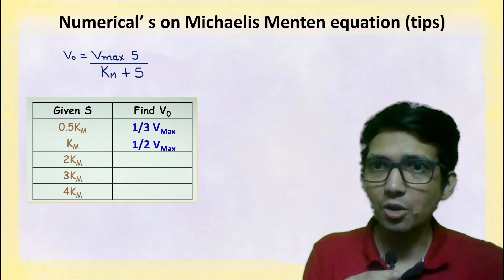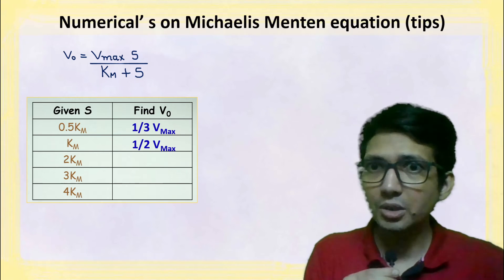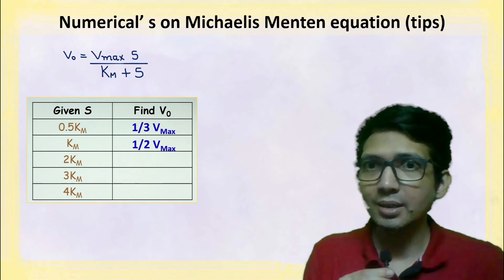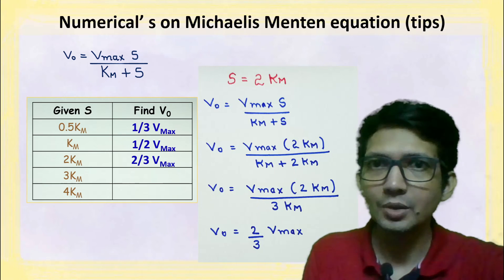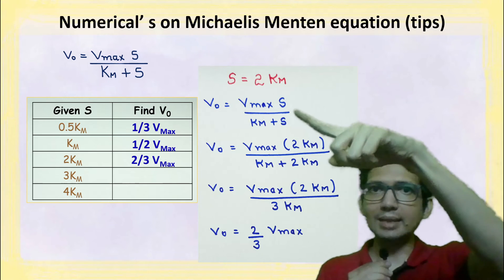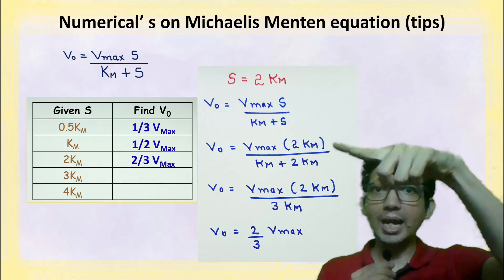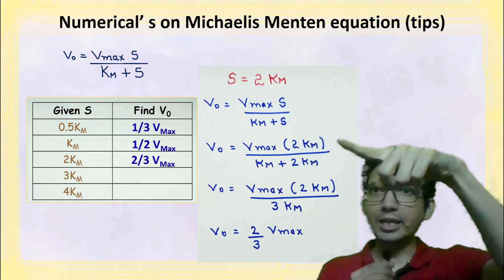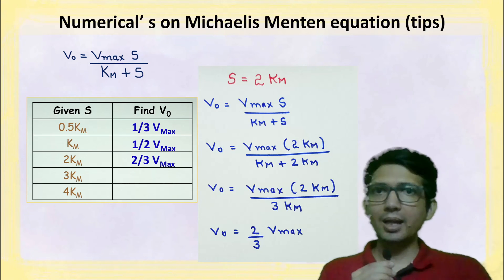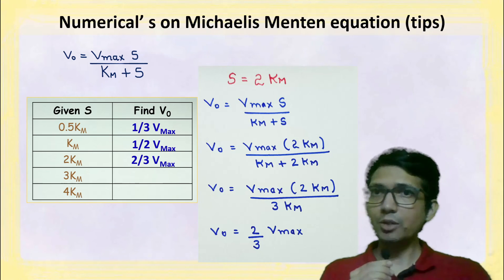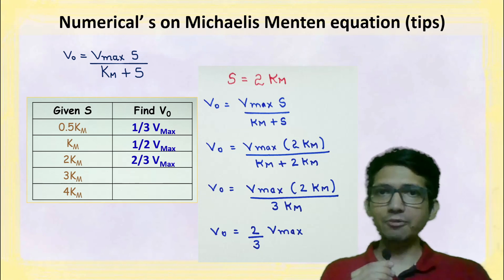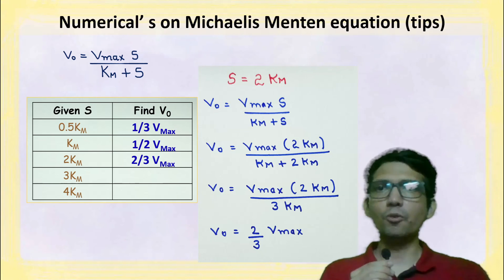For the third case, if the substrate concentration s equals 2 km, then s is replaced by 2 km. The km values cancel out and the final answer is two-thirds vmax. So if the substrate concentration is 2 times km, the velocity will be two-thirds of vmax.